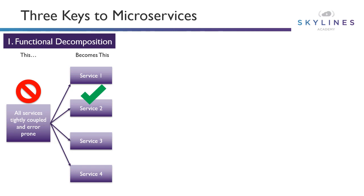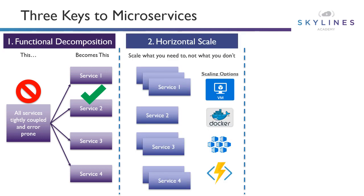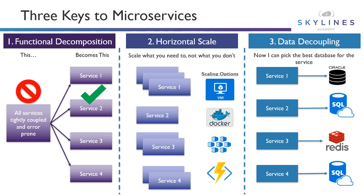Let's look at some of the keys to microservices. First, we have functional decomposition — all those tightly coupled, error-prone services become individual services. Then we look at horizontal scale: scale what we need to, not what we don't. This could mean scaling virtual machines horizontally with a scale set, scaling containers, or using serverless functions. In addition, we can decouple the data much more efficiently — I can pick the best database for each service. So service one might use Oracle, service two Azure SQL, service three Redis, service four MongoDB or Cosmos or something like that.